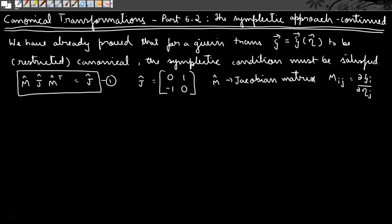Hello guys, welcome to Physics Grad. This is the second video on Part 6 of canonical transformation. In this video we are going to continue with our concept of the symplectic form and how to decide, on the basis of the symplectic condition, whether a given transformation is canonical or not.